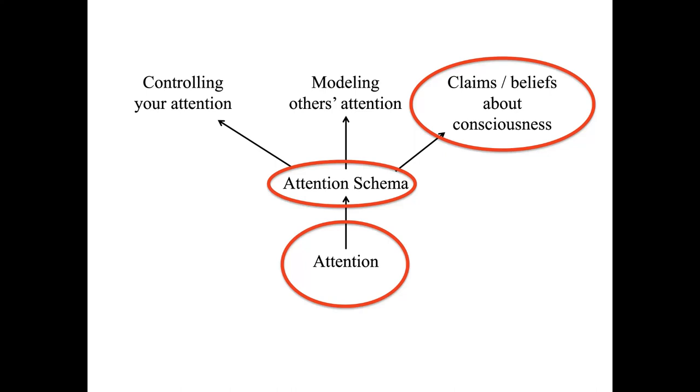Just so here, we should expect the attention schema to make the occasional mistake. Maybe at one particular moment you're attending to the apple, but the attention schema glitches and fails to represent that state of attention. And in that case, you're attending to something without reportable consciousness of it. And that phenomenon is now well established in probably about a hundred studies by now, some of which we've done.